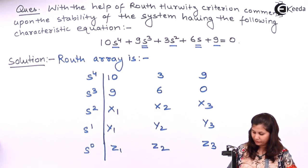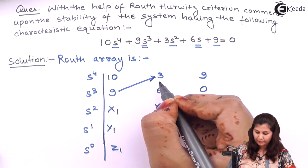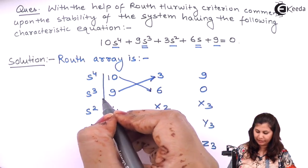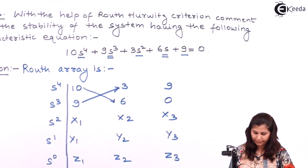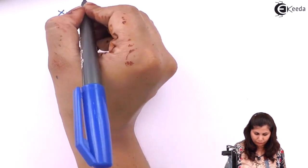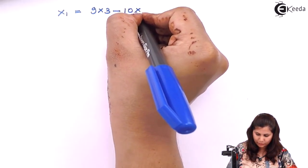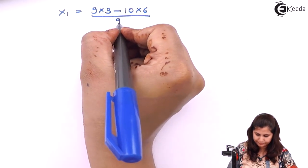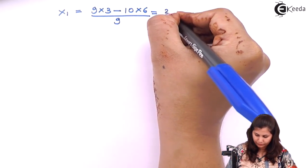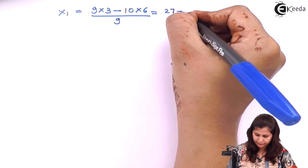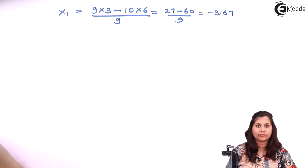The remaining elements we have to find out. x1 is given by (9×3 − 10×6) divided by 9, which equals minus 3.67.